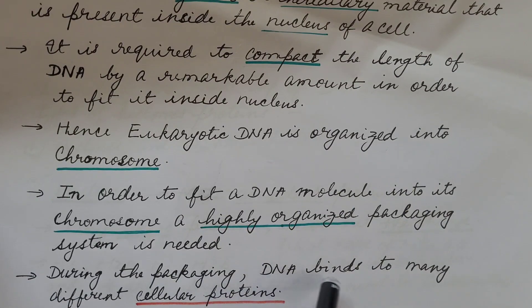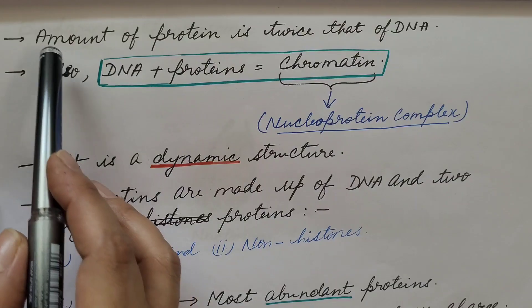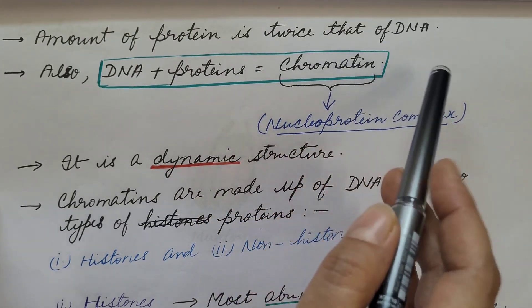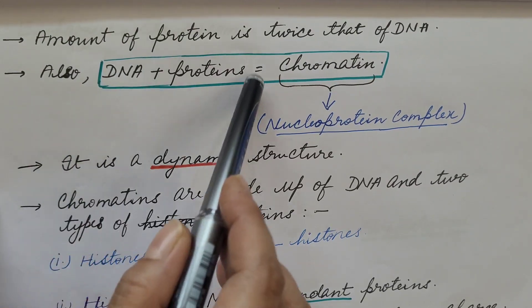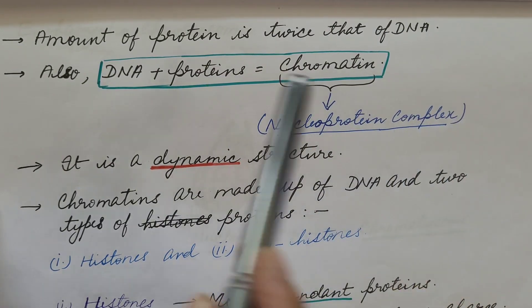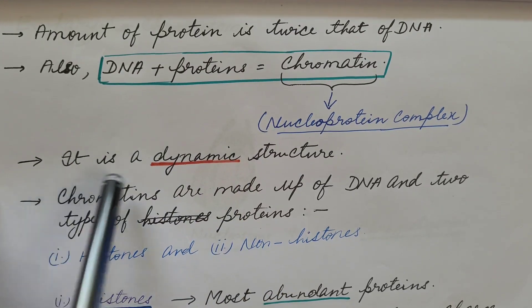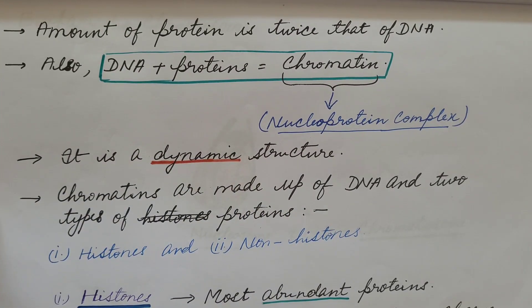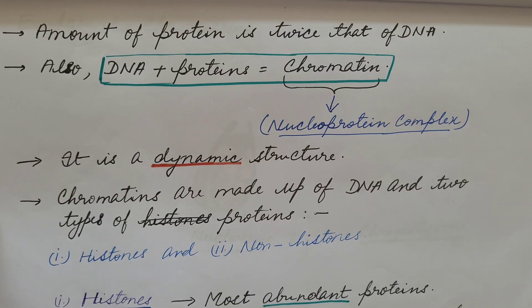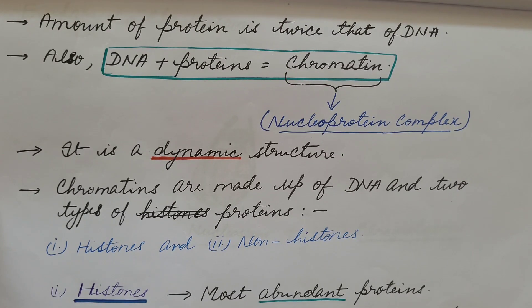During the packaging, DNA binds to many different cellular proteins. The amount of protein to which DNA binds is twice that of the DNA itself. DNA along with protein is known as chromatin — a nucleoprotein complex, that is DNA plus proteins. It is a dynamic structure because it is capable of changing its shape and structure during the life of a cell. Chromatin is a condensed chromosome at metaphase stage and a very diffuse structure in interphase.